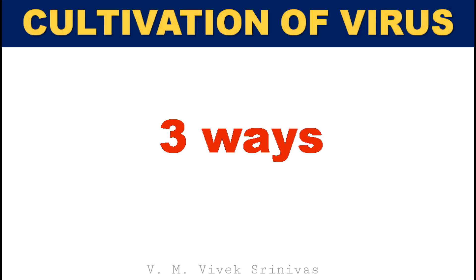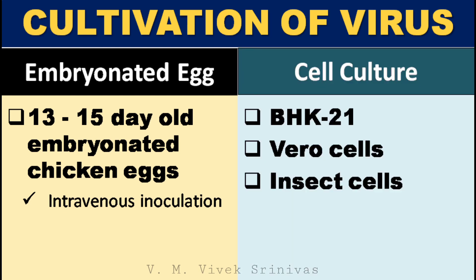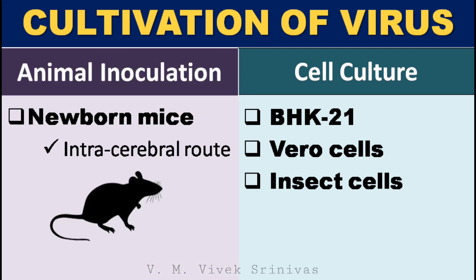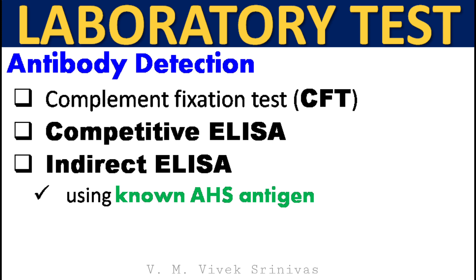This virus can be cultivated or isolated in the lab by three ways. First, embryonated egg inoculation using 13 to 15 days old embryonated chicken eggs via intravenous route. Second, cell culture system using BHK-21, Vero cells, and insect cells. Third, animal inoculation using newborn mice with intracerebral route of virus inoculation. For antigen detection, ELISA, virus neutralization test, reverse transcriptase PCR, and DNA sequencing for serotyping are done. For antibody detection, complement fixation test, competitive ELISA, and indirect ELISA are done, using known African Horse Sickness viral antigen.